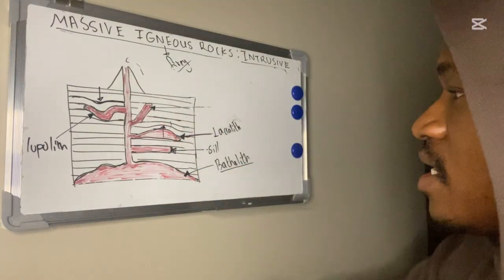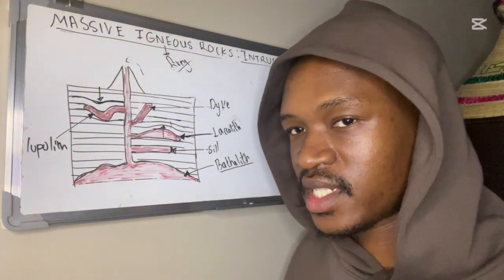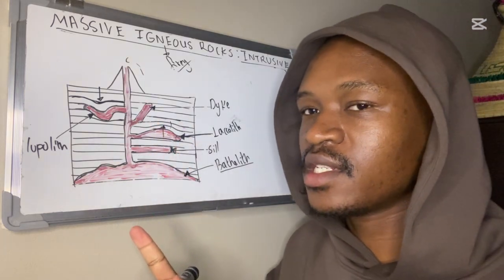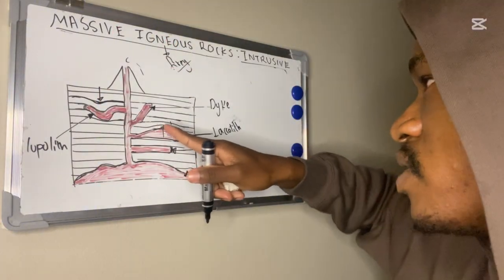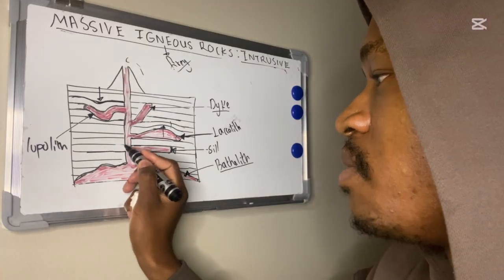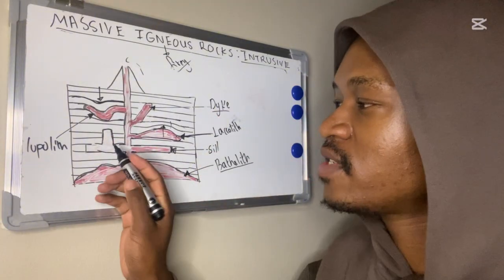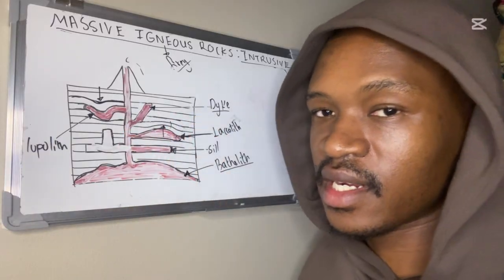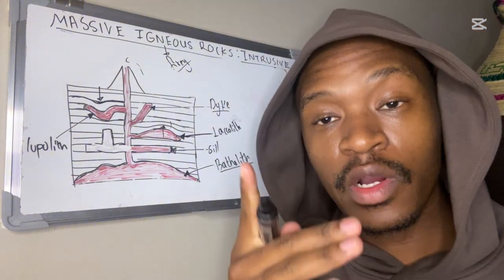This one here is our dyke. A dyke is a vertical intrusion. It won't always be facing directly upward — it's almost vertical. We call it our vertical intrusion, which is the dyke, spelled D-Y-K-E. When the dyke is exposed to the surface, it can form the hogsback ridge.